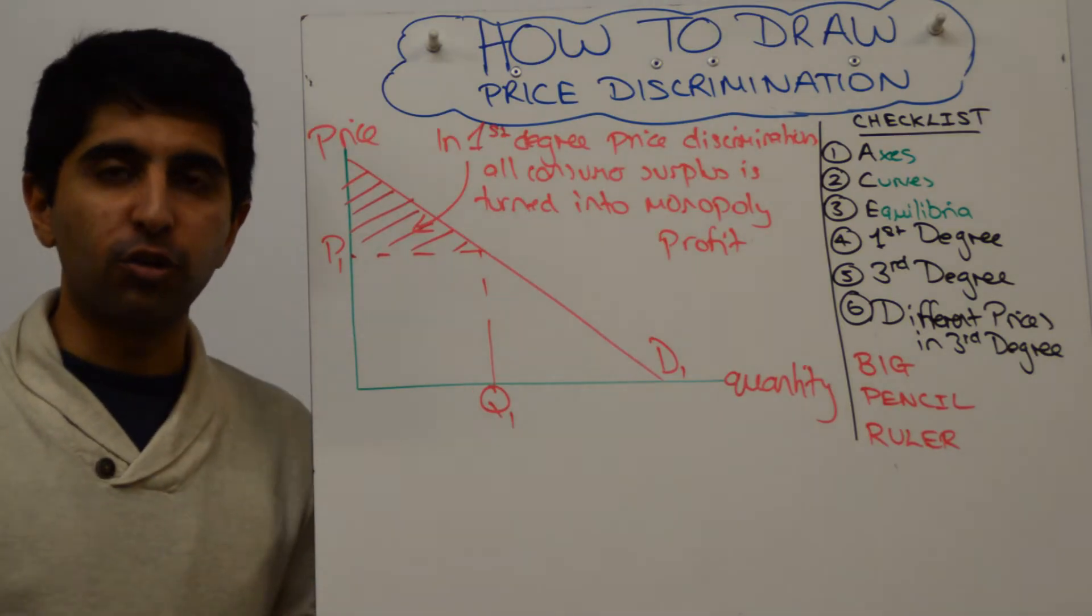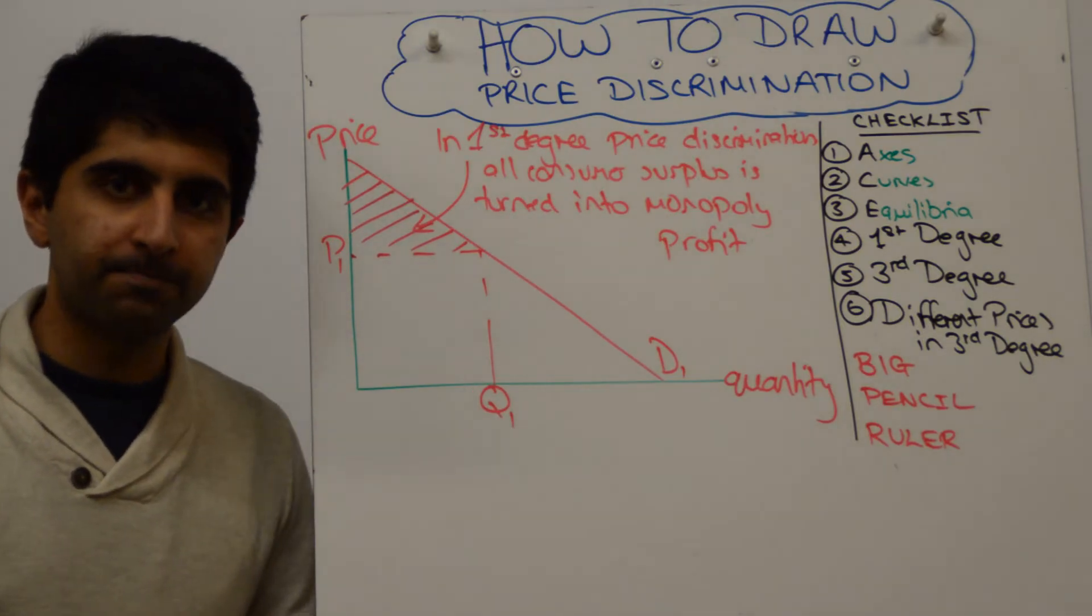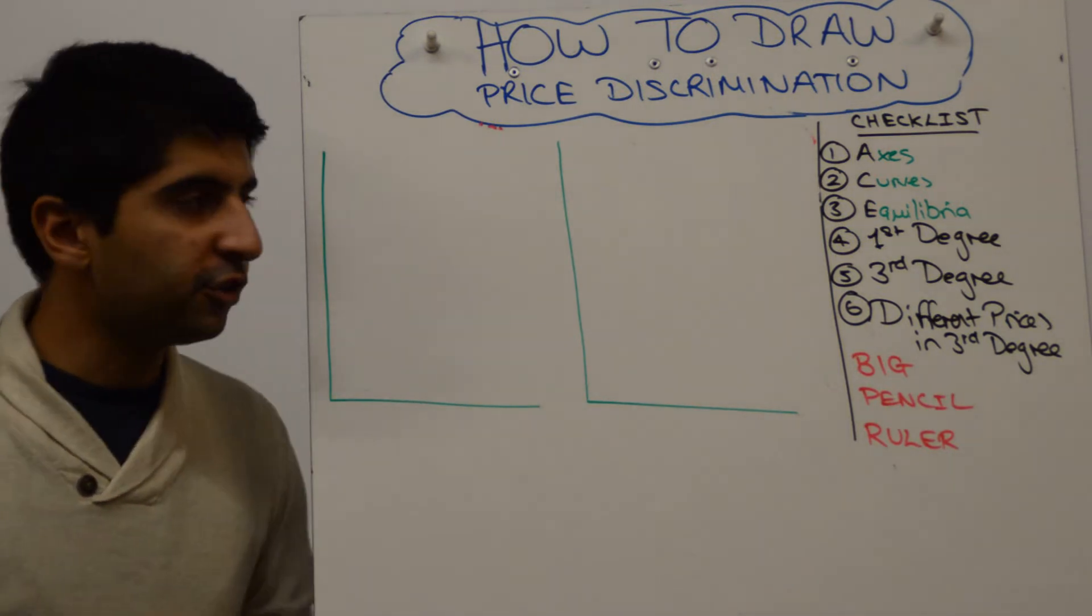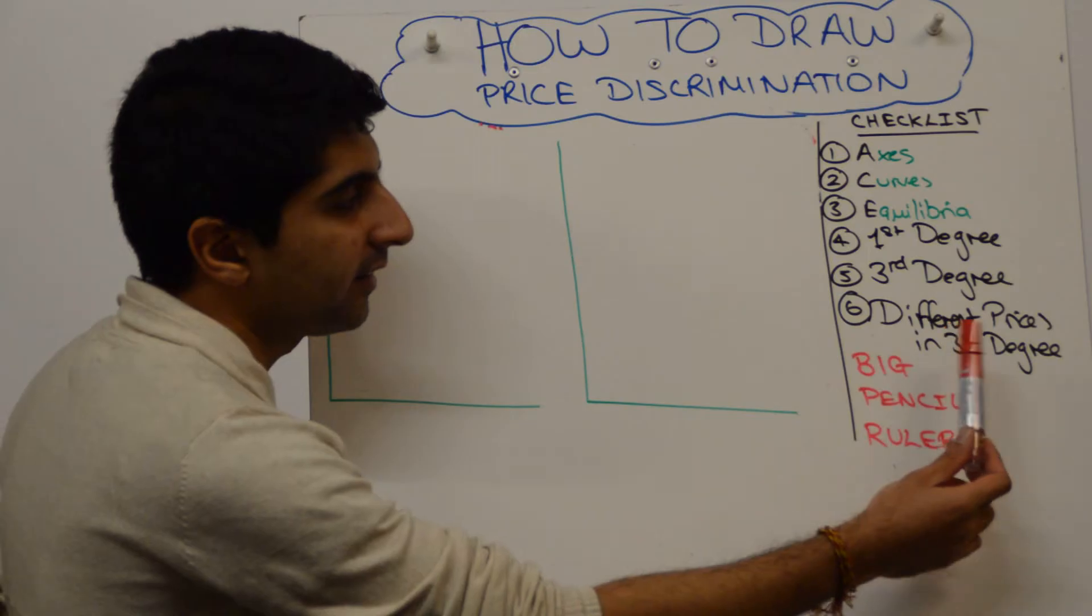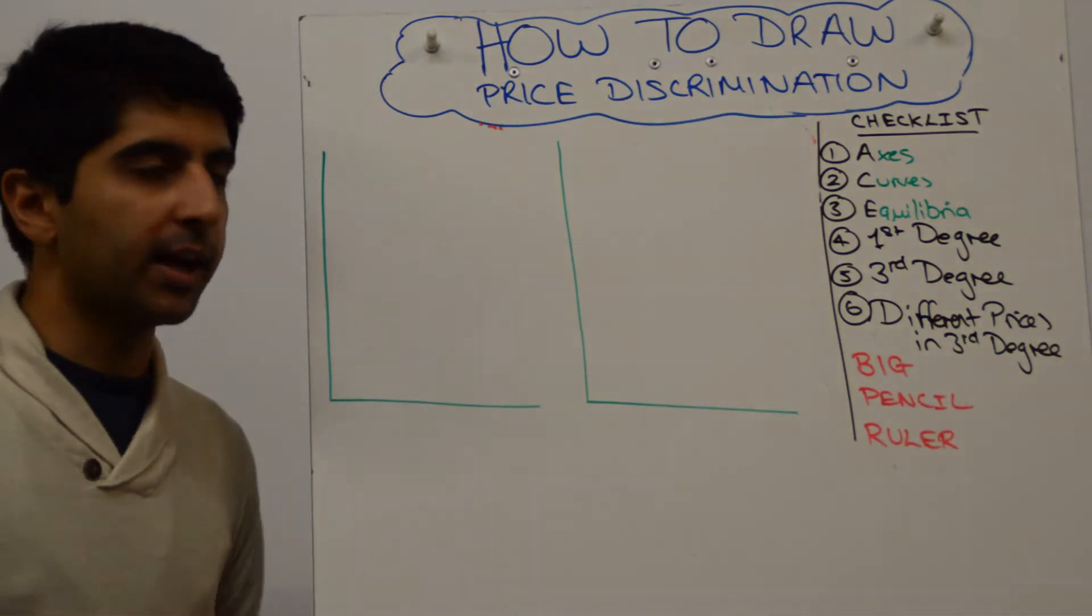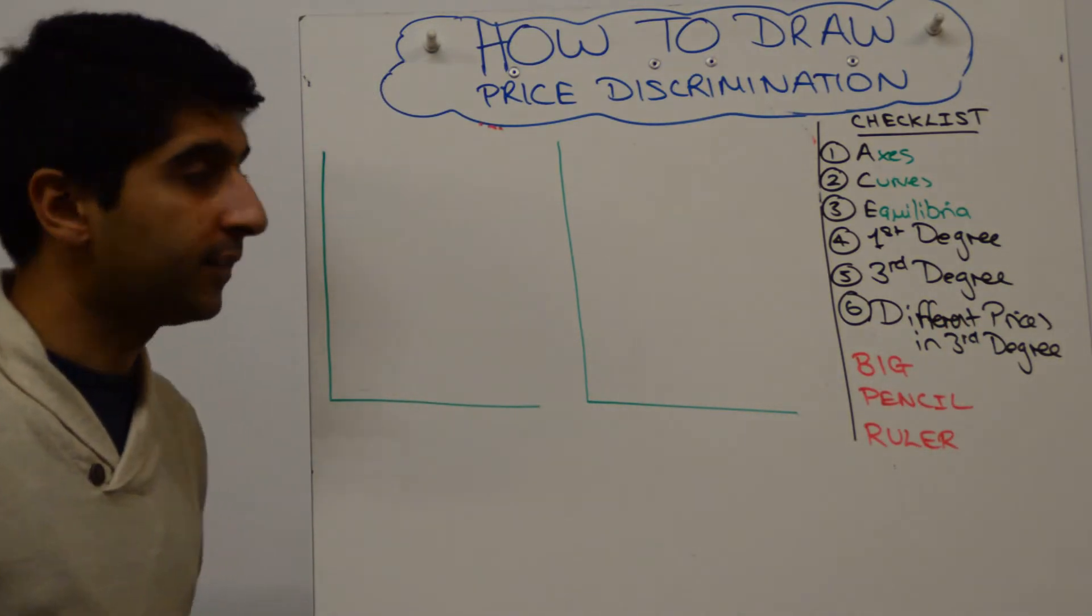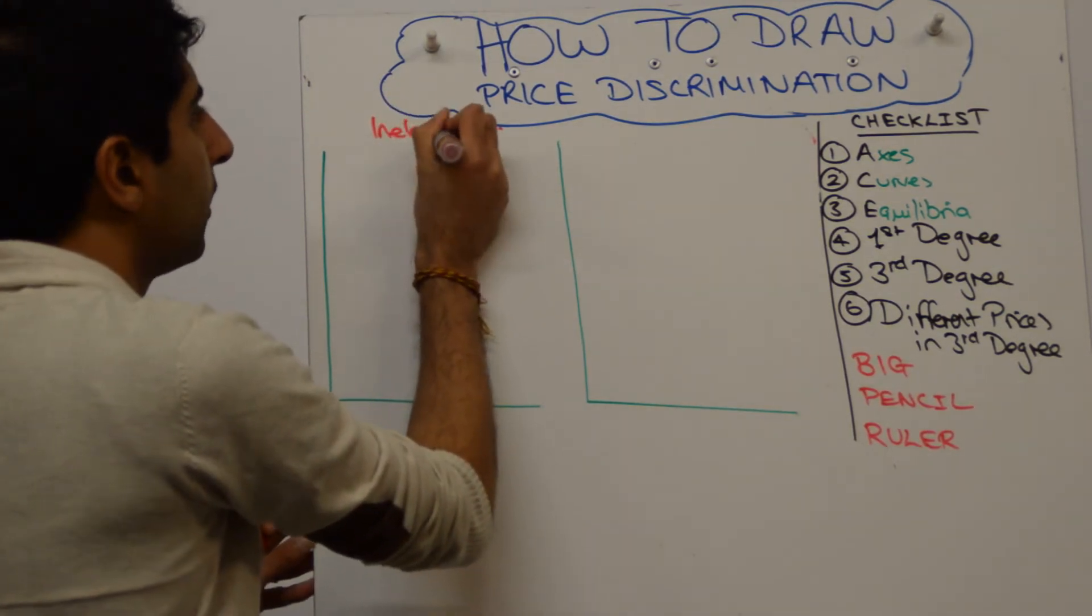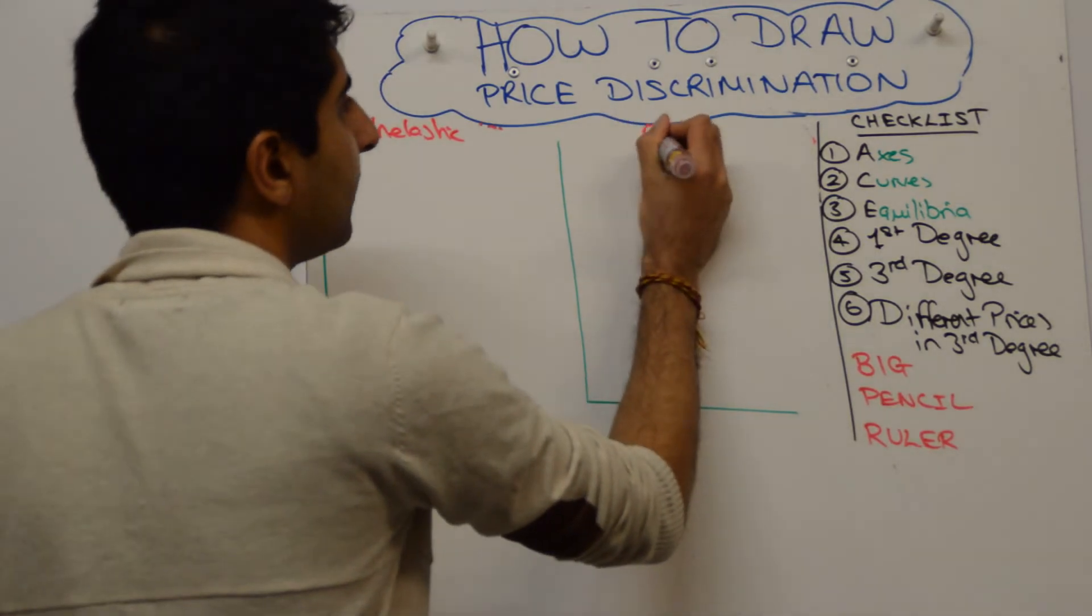Let's now look at third degree price discrimination and the diagram behind it. Okay then, so for third degree price discrimination, what are we trying to show? Well, we're trying to show that in different markets, in different segments of markets, there can be different prices. Specifically, when there is inelastic demand, and when there is elastic demand.